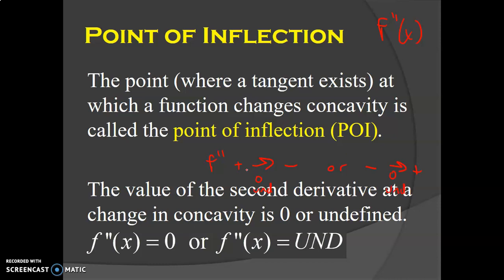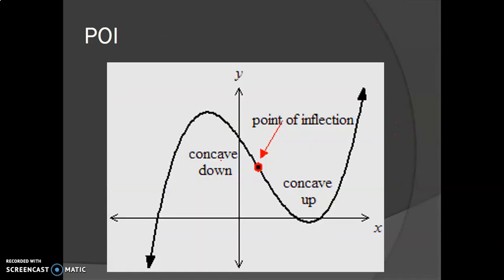There's not two different names for a point of inflection depending on which way you go — it's called a point of inflection either way. For extrema, you give just the y value; but for a point of inflection, you give both the x and the y value because it is a point — that's what the P in POI stands for. The point of inflection is just where we switch concavity, for example going from concave down to concave up.